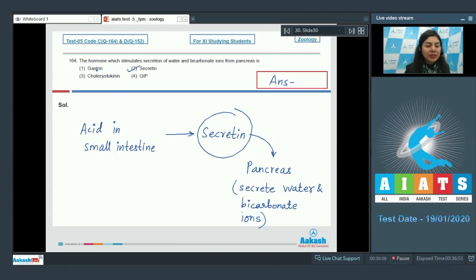The right answer here would be secretin, option number two. Let's look at the other options: gastrin would stimulate the release of gastric juice for digestion; cholecystokinin would act on both pancreas and gallbladder to release pancreatic juice and contract the gallbladder to release bile; whereas GIP, gastric inhibitory peptide, would inhibit the gastric motility and its secretions.